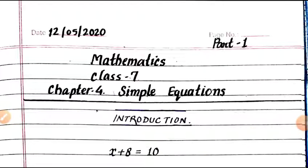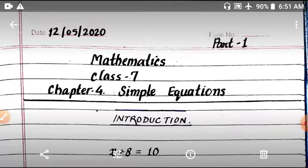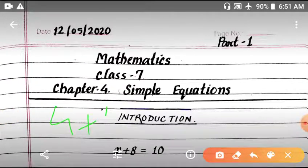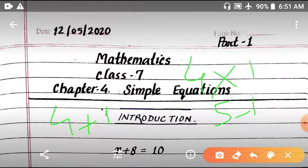Hello everyone, this is Bhupendra here and today we will discuss Chapter 4 of Class 7 and the chapter name is Simple Equations. Now you have to learn simple things: addition like 4 plus 1, subtraction like 5 minus 1, and multiplication like 4 into 1.